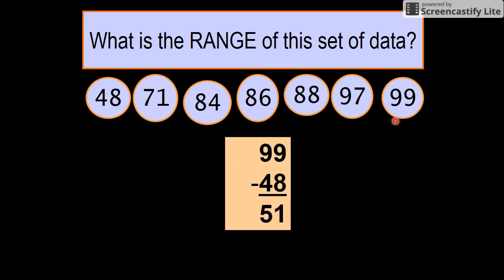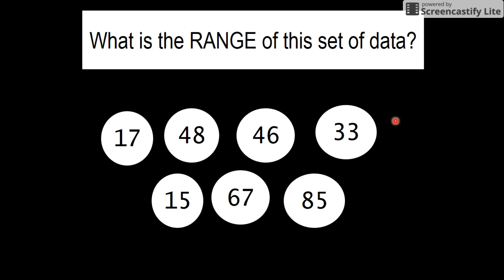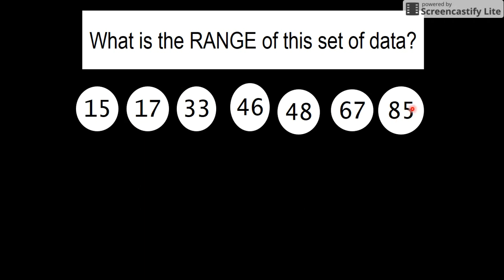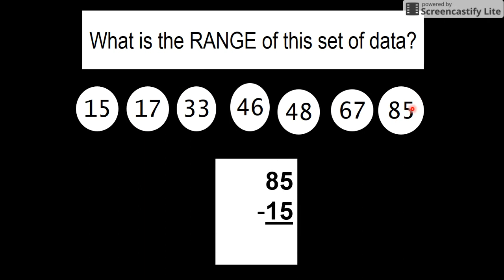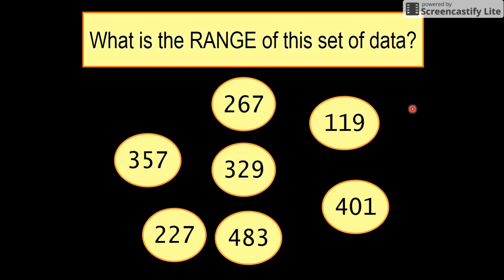What's the range of this one? Put them into—I nearly said alphabetical order—numerical order. 15 is your smallest, 85 is your biggest. Take them away from each other, there you have your range. What is the range in this set of data? You've got 119 is your smallest, 483 is your biggest. Subtract them and there you go.